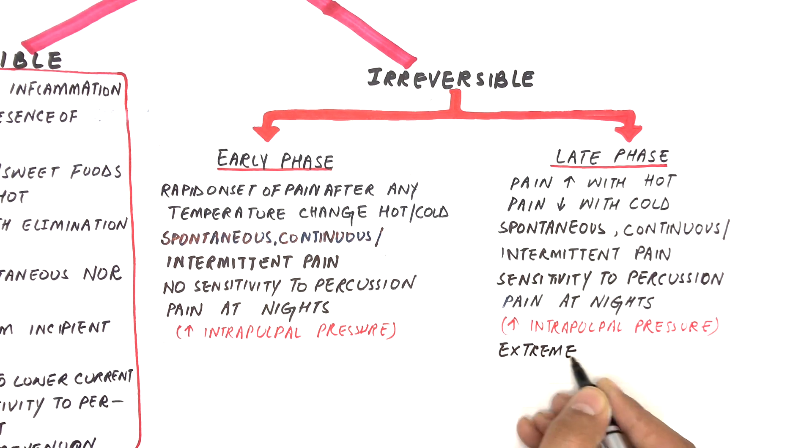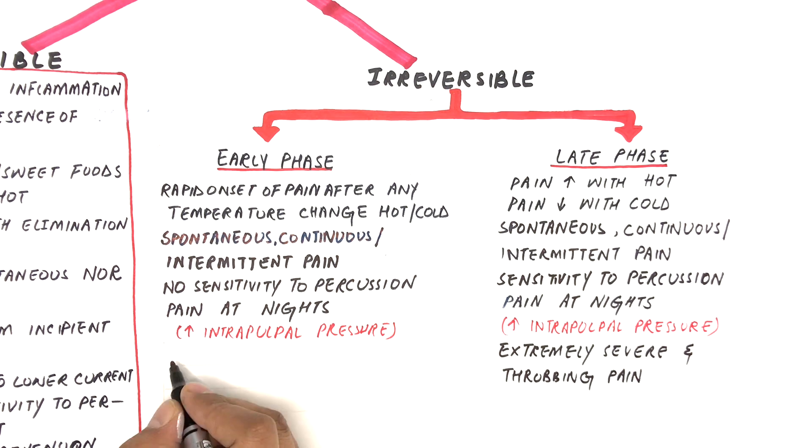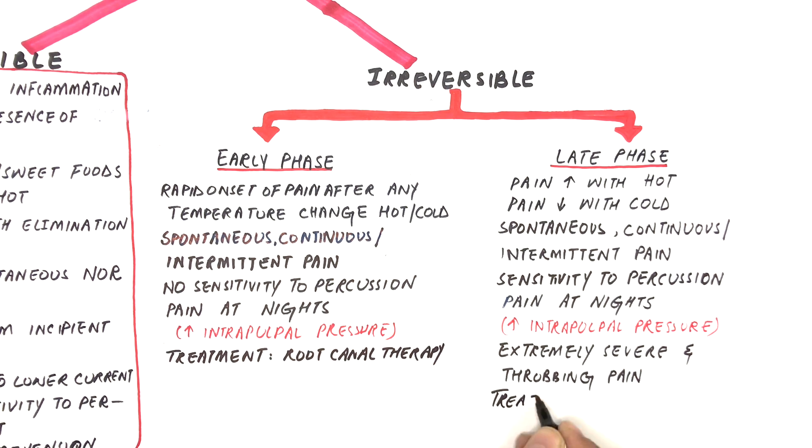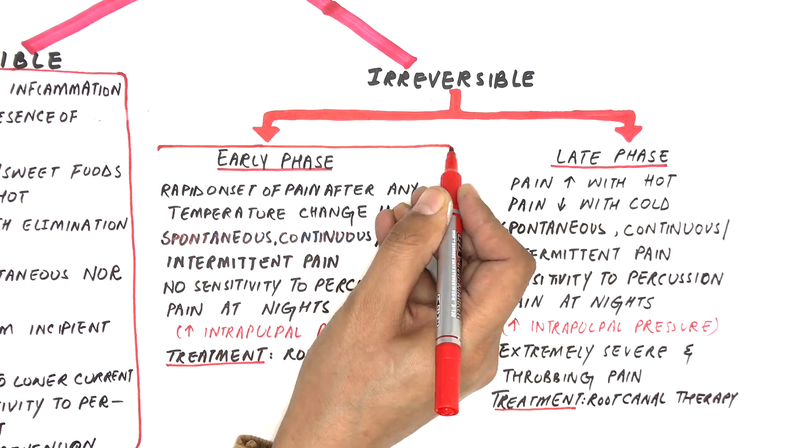In later stages of irreversible pulpitis, the pain becomes so severe and throbbing in nature that it keeps the patient awake at nights. Patients most of the time report sleepless nights. Treatment for both phases of irreversible pulpitis is root canal therapy.